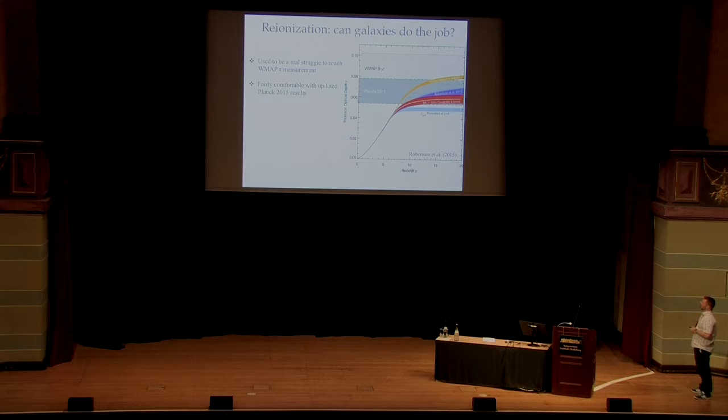And when WMAP was up here for tau, then it was a real struggle. We could hardly do it. You could just about do it, and that's what the orange curve shows here. If you push the star formation rate density way higher than we actually observed, it was always a bit of a worry that we couldn't do it with galaxies. When Planck came down to a much smaller number last year, then it looked much more comfortable. So the red line here is our best estimate from a paper by Brant Robertson, basically using this star formation rate density. So as of last year, things looked quite comfortable.